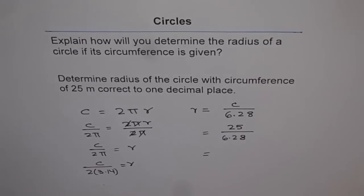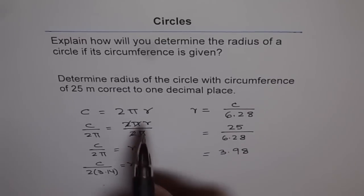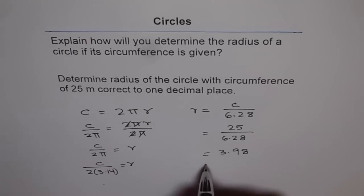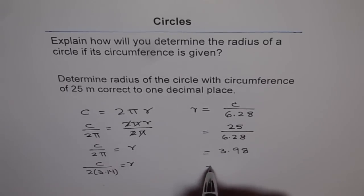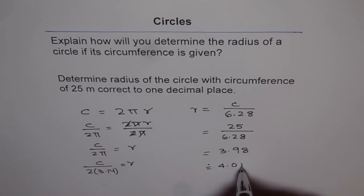Let's use calculator. 25 divided by 6.28 is equal to 3.98. If we approximate it to one decimal place, then we can get 4.0. We get approximately 4.0 and the units are meters.